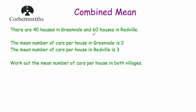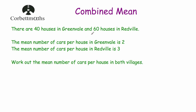So let's have a look at a typical question. There are 40 houses in Greenville and 60 houses in Redville. The mean number of cars per house in Greenville is 2, and the mean number of cars per house in Redville is 3. Work out the mean number of cars per house in both villages — in other words, the mean number of cars per house for all 100 houses. So first of all, let's consider what the mean is. The mean is what we find when we add up the total number of values and divide by the number of values.